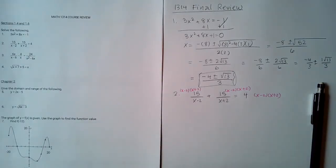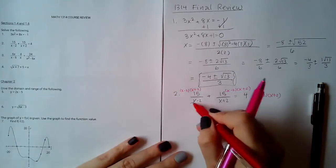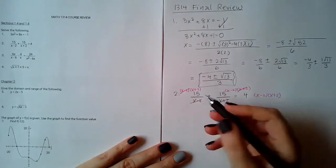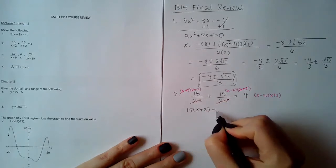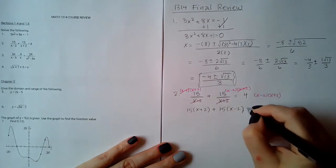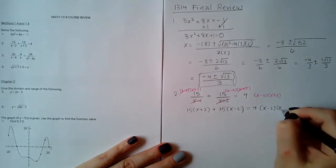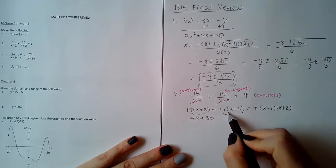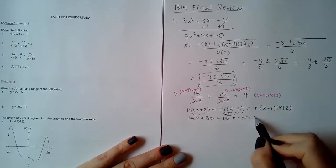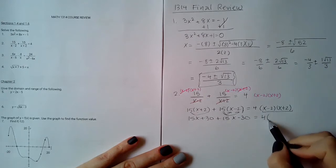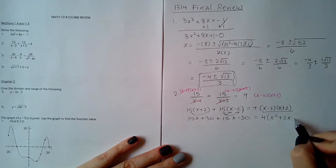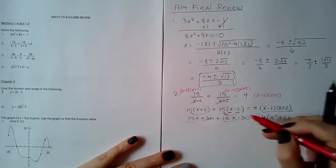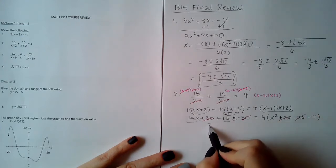What ends up happening is the x minus 2 will cancel, the x plus 2 will cancel, and here there was no denominator to cancel anything, so I'm left with 15 times this factor plus 15 times this factor equal to 4 times both factors. Distributing the 15 gives 15x plus 30, and distributing the other 15 gives 15x minus 30. Over here I'll multiply the factors first: x squared plus 2x minus 2x minus 4.